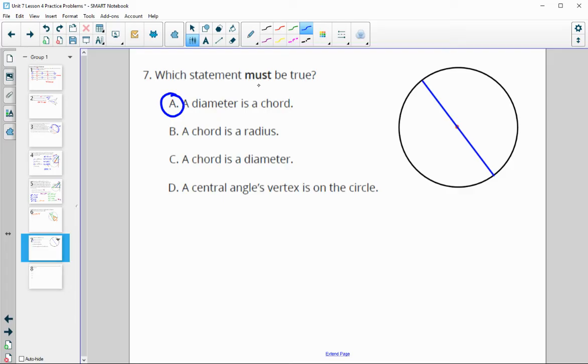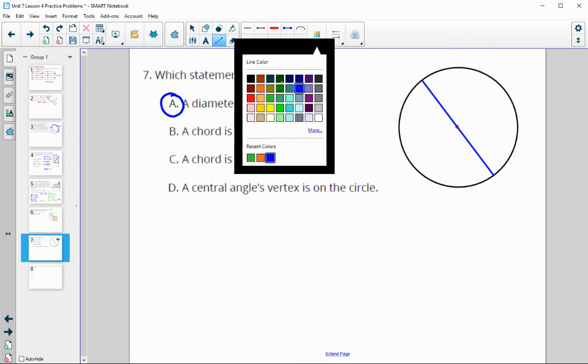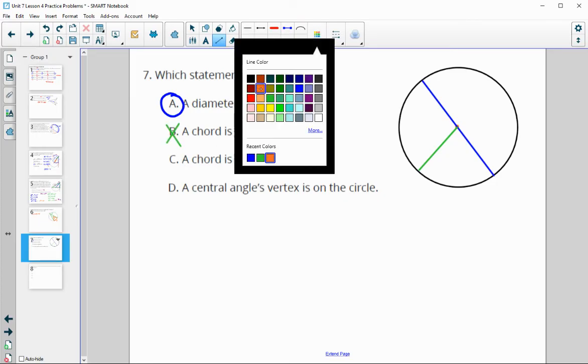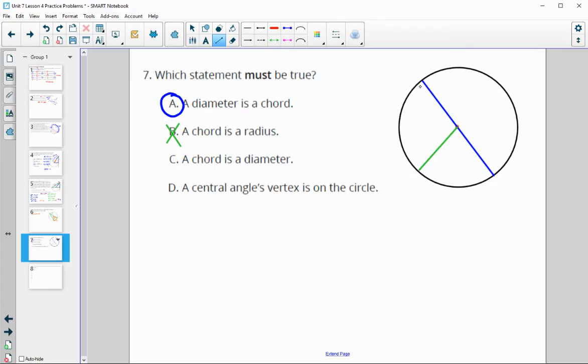So that's the answer, because it says which statement. So there's only one that must be true, but let's look at the rest just to make sure. A radius is a chord, false, because a radius goes from center to edge, not all the way across. A chord is a diameter. Well, it can be, but it doesn't have to be. This is a chord that goes through the center. So it is a diameter, but it could just go here. So this is also a chord. So that's false.